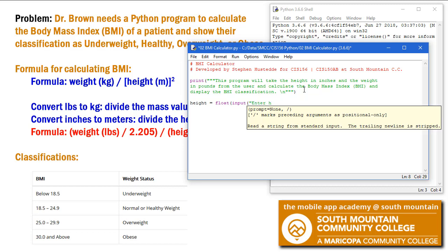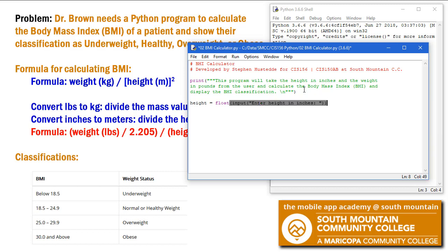So we'll take the input. We're going to say enter height in inches. I need two closing parens since I have two left. So we'll take that value, the input as a string, convert it to a float, and assign it to our variable height. We'll do the same thing for weight.